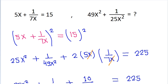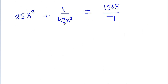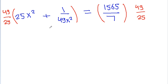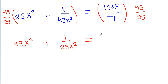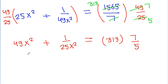If we multiply both sides by 49 by 25, then 49 by 25 times 25 will give 49x square, plus 49 by 25 times 1 by 49x square will give 1 by 25x square. Here 7 times 7 is 49, and 5 times 5 is 25, and 5 times 3 is 1565. So if we multiply both sides, we get 313 into 7 by 5, and we get 49x square plus 1 by 25x square.